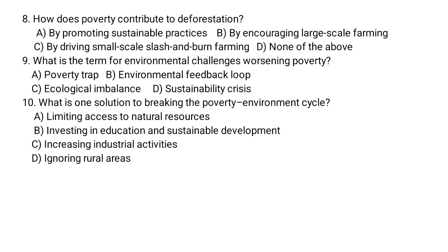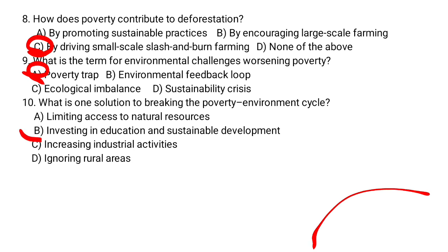The answer for question number eight is c — by driving small-scale slash and burn farming, poverty contributes to deforestation. Question number nine: poverty trap is the term for environmental challenges worsening poverty — a is the correct answer. Question number ten: investing in education and sustainable development is the solution to breaking the poverty-environment cycle — b is the correct answer.